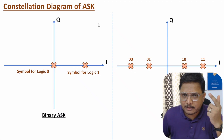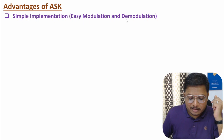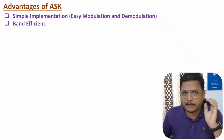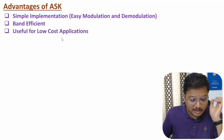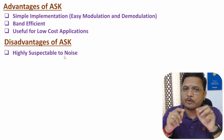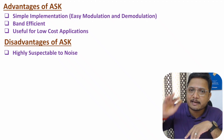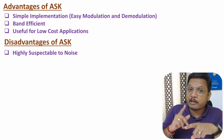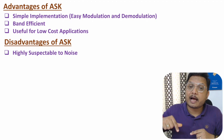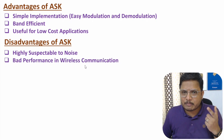The advantages of ASK are: it is simple to implement with easy modulation and demodulation, it is bandwidth efficient with minimum bandwidth of 2fb, and it is useful for low cost applications. The disadvantage is that it is highly susceptible to noise, because decision making happens with respect to amplitude. Amplitude has the highest probability of noise compared to phase or frequency based modulation.